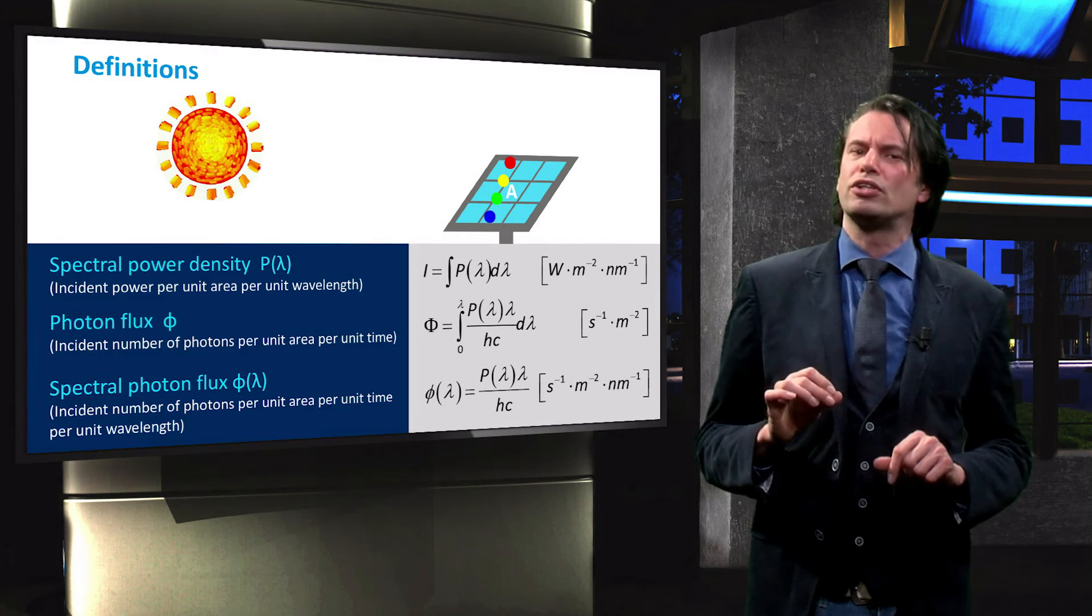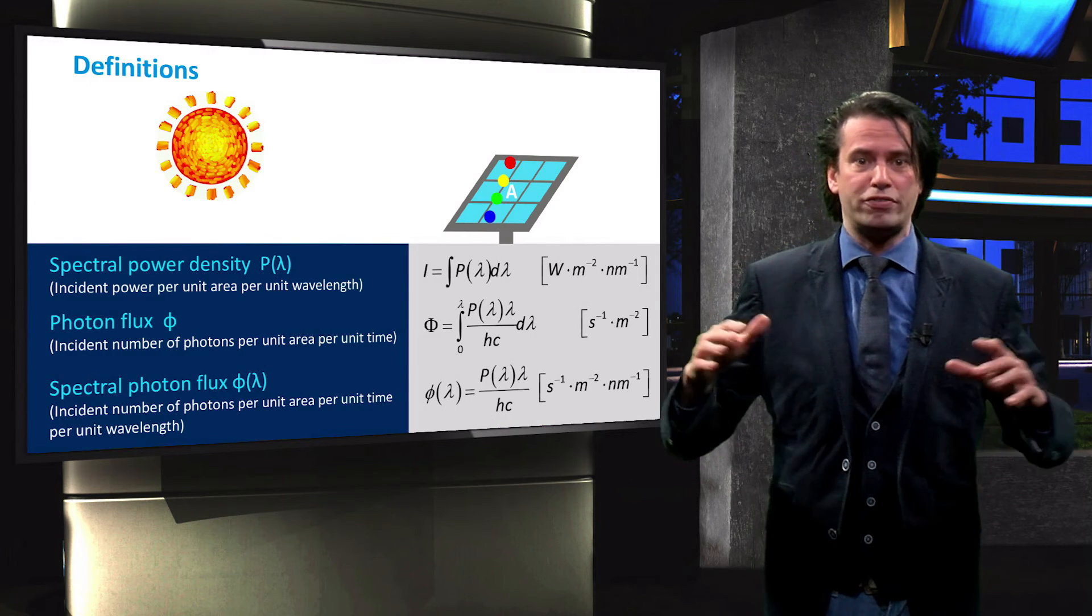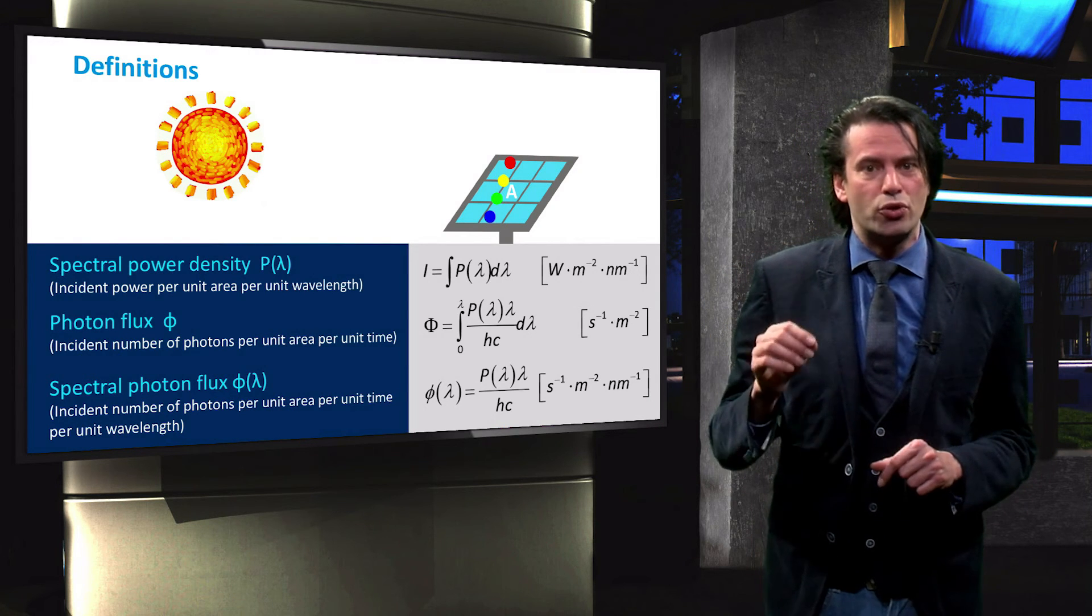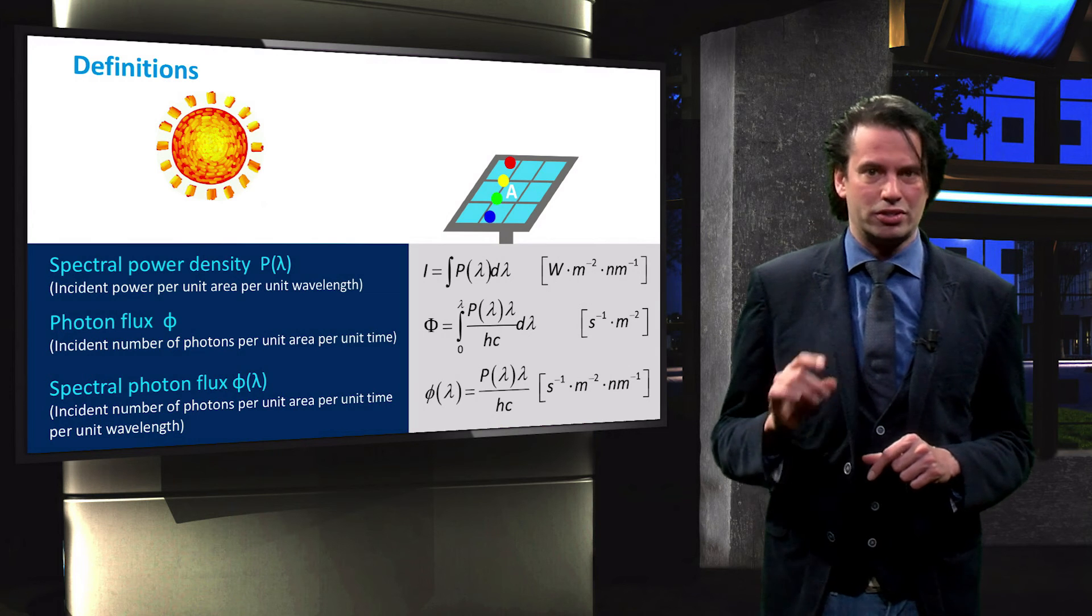Integrating the photon flux and photon energy over all relevant wavelengths provides the total power incident on a surface.